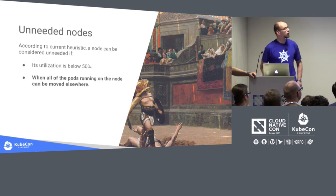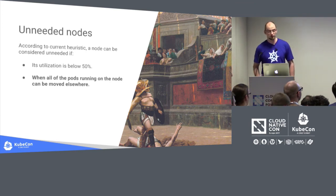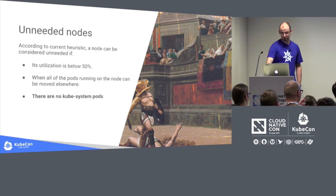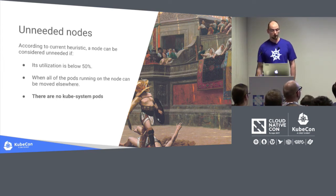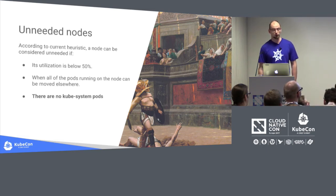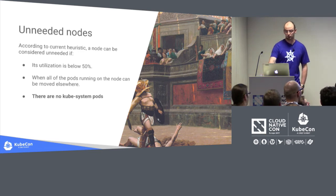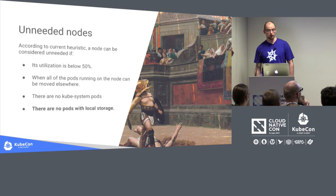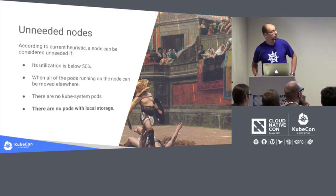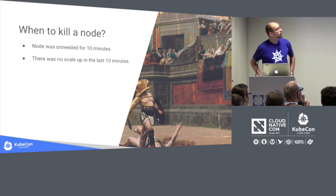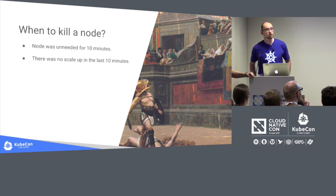We check if all pods running on the node can be moved elsewhere — this means they are backed by a ReplicaSet, Deployment, Job, or StatefulSet, or they run by default via manifest or DaemonSet. We don't touch kube-system pods, meaning we won't kill a node with Heapster or DNS running on it, which may lead to some resource waste. We also don't touch nodes with pods that have local storage, since that storage would be lost.